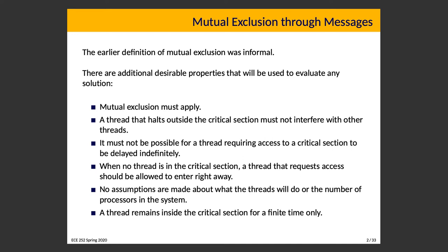The sixth property is more of an assumption: a thread remains in the critical section for a finite time only. We interpret this as our solution must provide a way for a thread to indicate it has left the critical section, otherwise we don't know when a turn is done. If something goes wrong — like a thread crashes mid-critical-section or a process dies while holding a critical resource — the system may break down, but handling that is outside our design scope, assuming cleanup handlers are implemented.